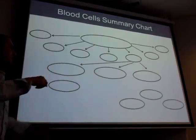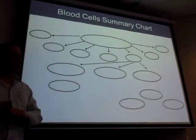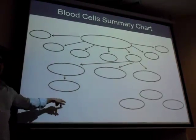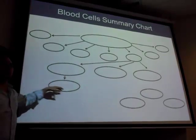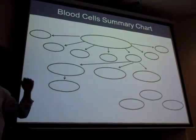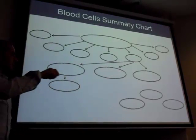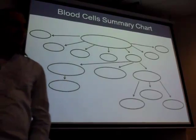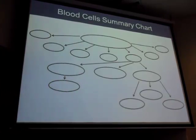Lymphocytes differentiate into three types: T lymphocytes, B lymphocytes, and natural killer cells. B cells turn into plasma cells, which secrete Y-shaped antibodies. Natural killers are in the middle. T cells can become three types: TH (helper), TS (suppressor), and TC (cytotoxic).